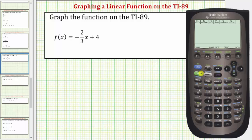To do this we press diamond F1. Let's enter the function in Y1. So let's press the up arrow, clear to clear the old function, and now we'll enter the new linear function. So we'll enter negative two divided by three, X plus four.